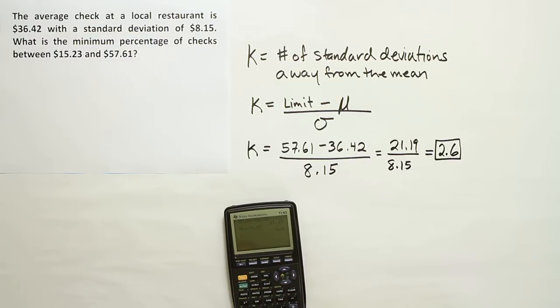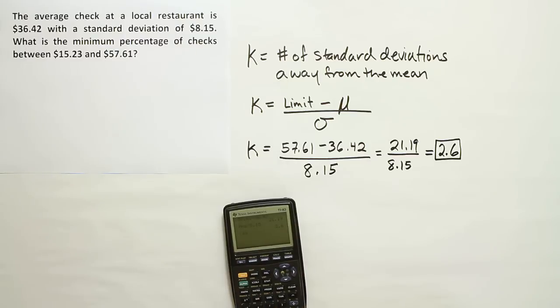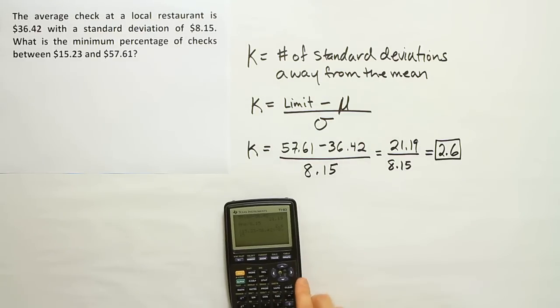I'm going to go ahead and do 15.23 minus the 36.42 divided by 8.15. And if you're following along at home, I'm putting the top in parentheses so I can do it all at once in my calculator.